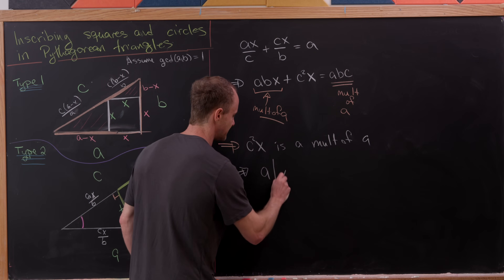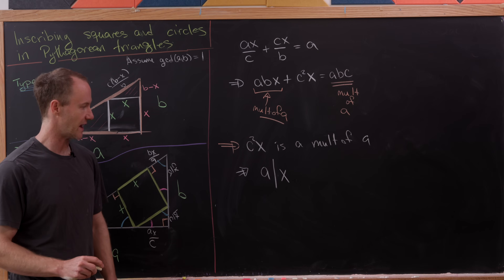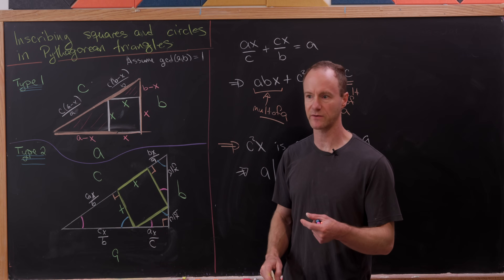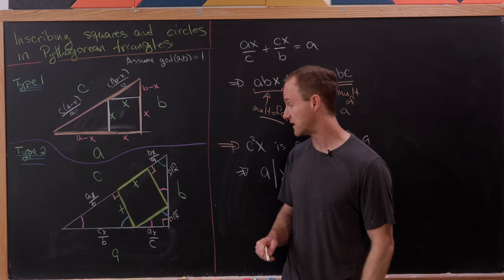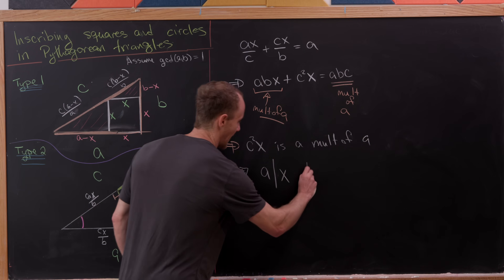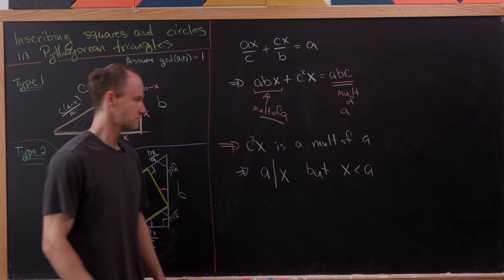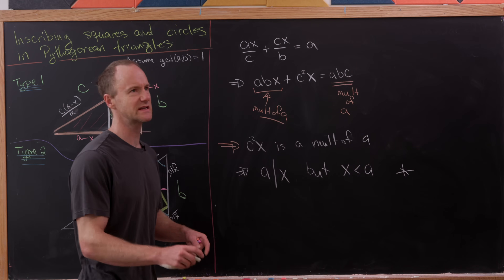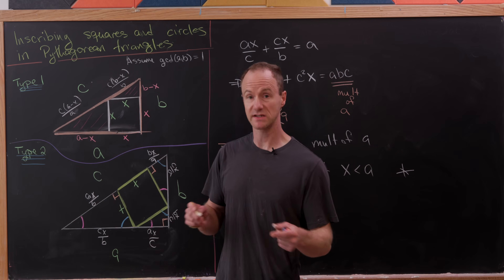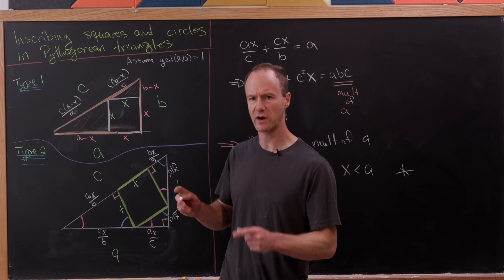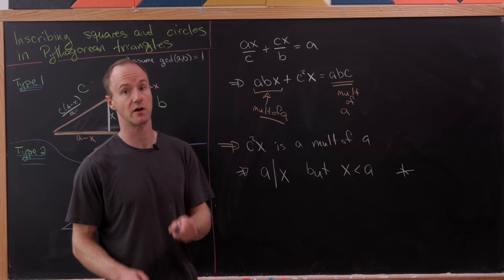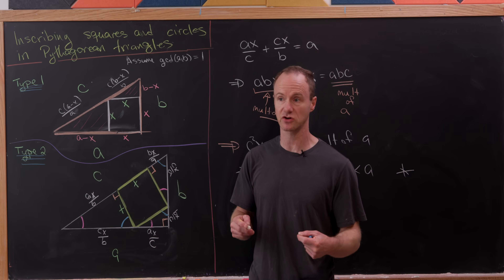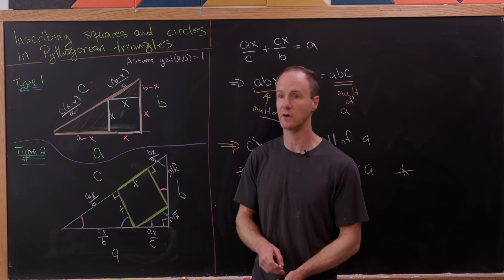Since a and c are relatively prime — which follows from gcd(a, b) = 1 together with the Pythagorean theorem — a must divide x, meaning x is a multiple of a. But x is inscribed inside the triangle, so x must be less than a. You can't have a larger number dividing a smaller one — that's a contradiction. So x cannot be an integer. In both cases, we cannot inscribe a square with integral side length into a Pythagorean right triangle.